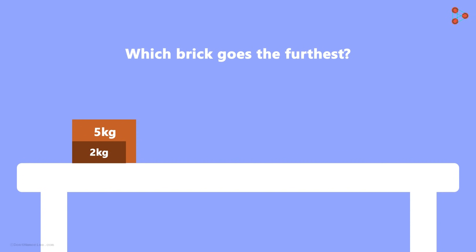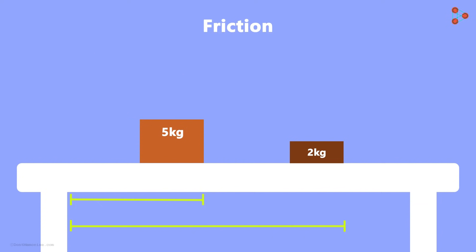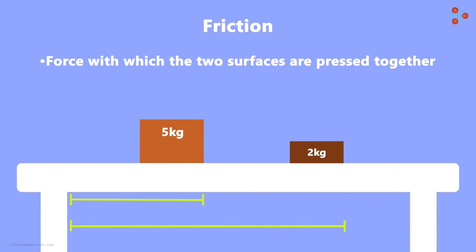And the surfaces of the bricks are also the same. On applying the same amount of force, you will notice that the lighter brick covered more distance than the heavier one. What does this tell us? It tells us that friction also depends on the force with which the two surfaces are pressed together.